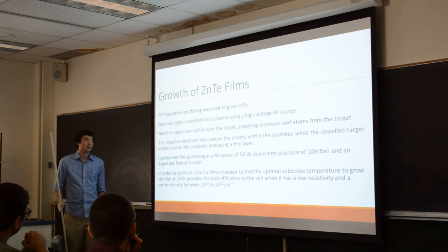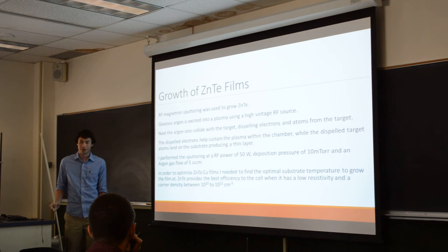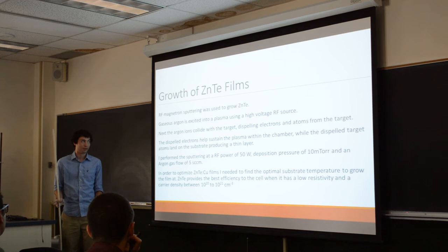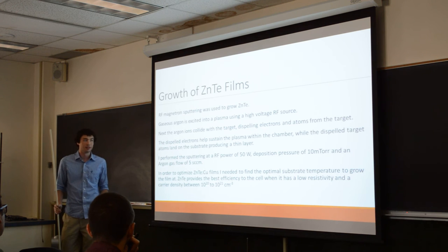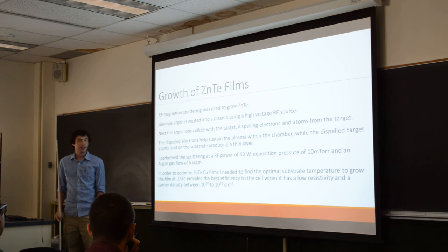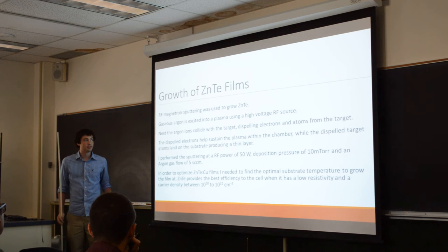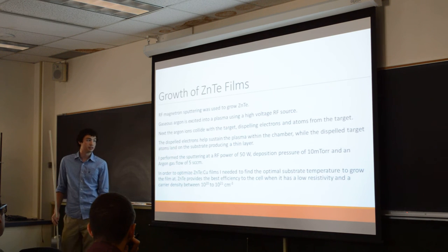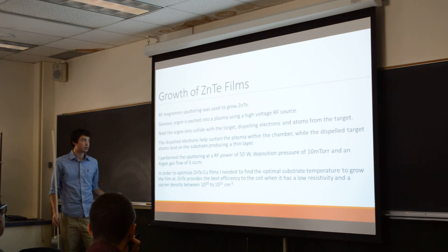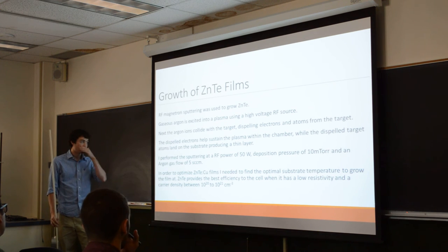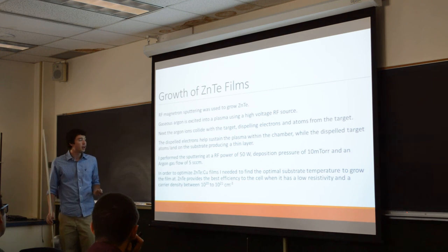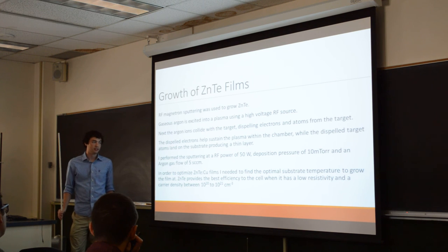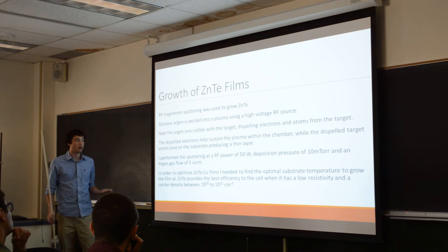All the zinc telluride films that have been grown were done using radiofrequency magnetron sputtering. Gaseous argon is excited into a plasma using a high-voltage radiofrequency source, then the argon atoms collide with the target releasing target atoms and electrons. Electrons help sustain the plasma while the expelled target atoms eventually land on the substrate. In these experiments I used 50 watts of radiofrequency power, a deposition pressure of 10 millitorr, an argon gas flow of 5 cubic centimeters, and a deposition time of 30 minutes.